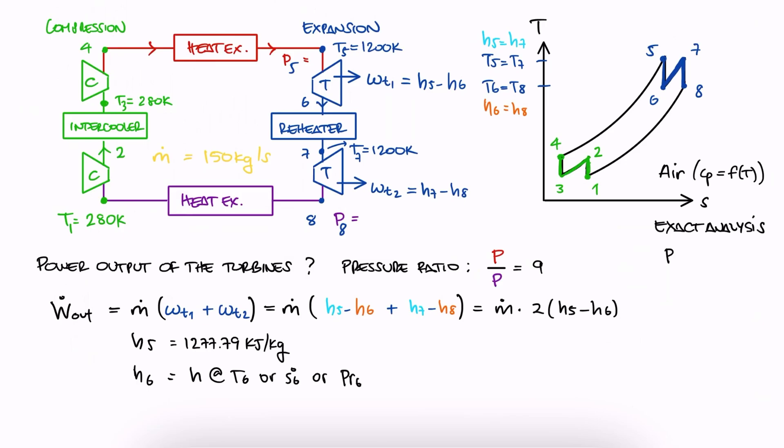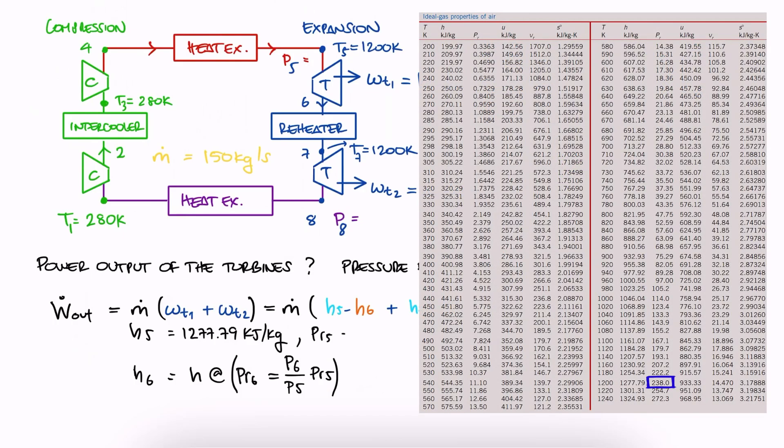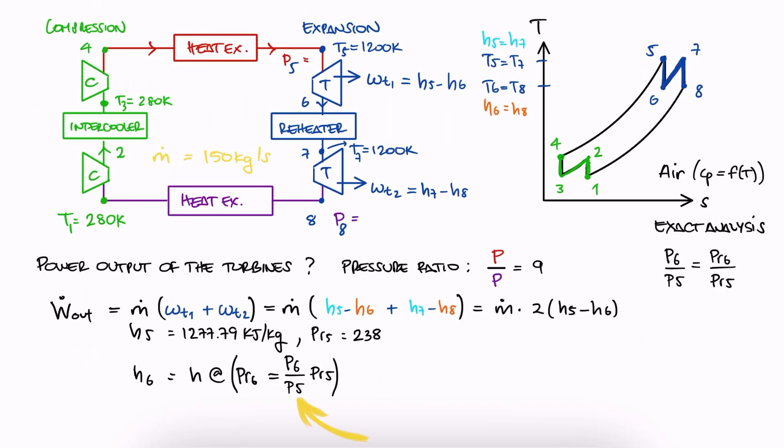The ratio between pressures is the same as the ratio between relative pressures. We solve for PR6 to define state 6, and with it, find the specific enthalpy value we're looking for. We see that we need PR5, which we can easily find in the table for the given T5 temperature. Now, for the ratio P6 over P5...